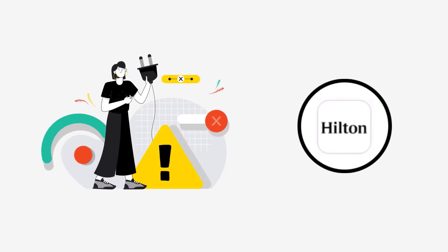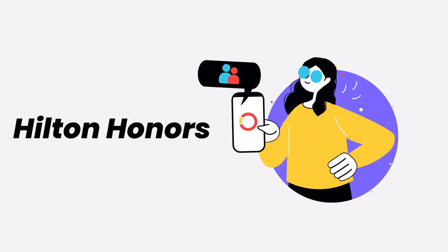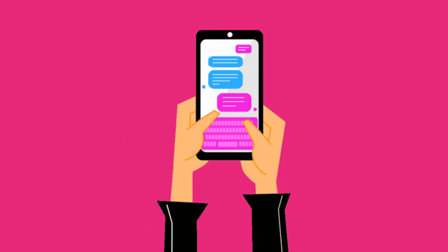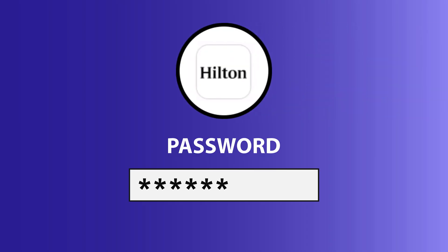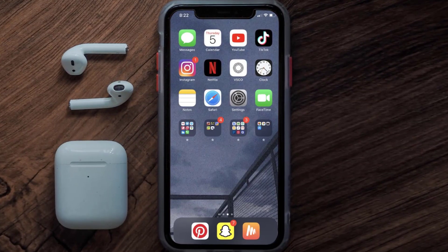It might be possible that you're not able to log into the Hilton Honors app due to a connectivity issue. First of all, you need to make sure you have a strong and stable internet connection. Do a quick test by opening an app that runs on internet other than the Hilton Honors app and check if it's working. You can also try switching from Wi-Fi to mobile data and vice versa — doing this might help you log in.